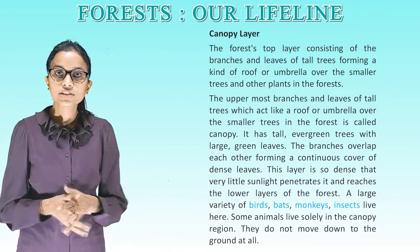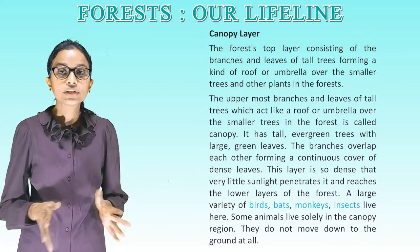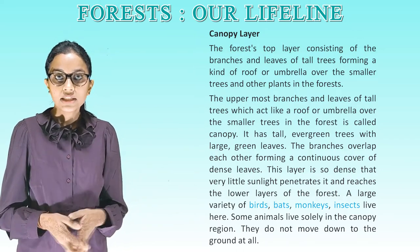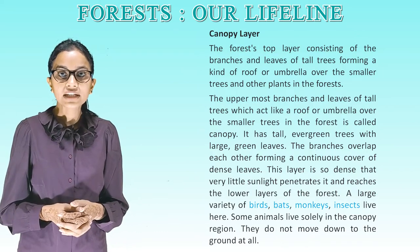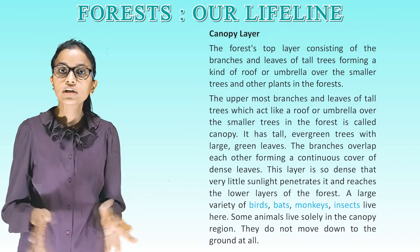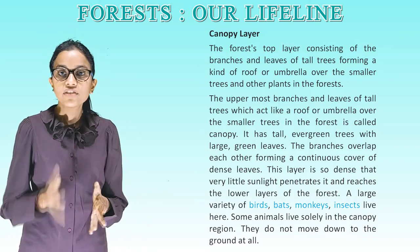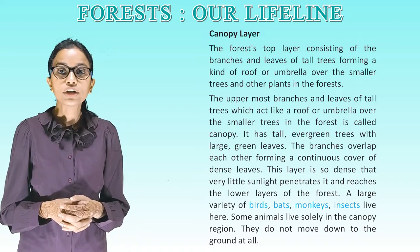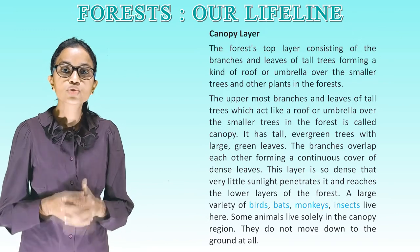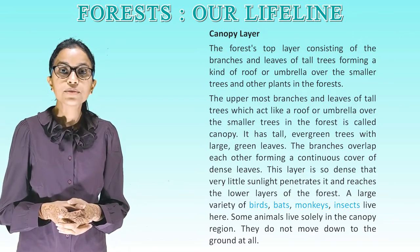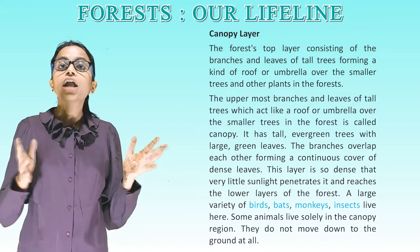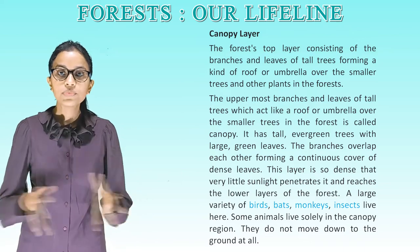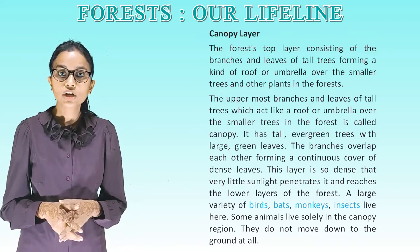Canopy layer: The uppermost branches and leaves of tall trees which act like a roof or umbrella over the smaller trees in the forest is called the canopy. It has tall evergreen trees with large green leaves. The branches overlap each other forming a continuous cover of dense leaves. This layer is so dense that very little sunlight penetrates it and reaches the lower layers. A large variety of birds, bats, monkeys and insects live here. Some animals live solely in the canopy region and do not move down to the ground at all.